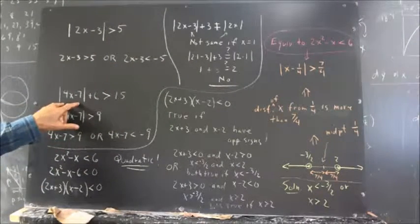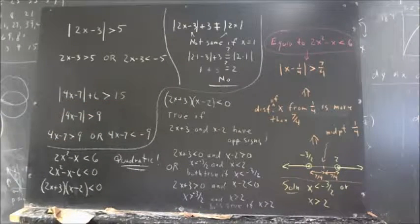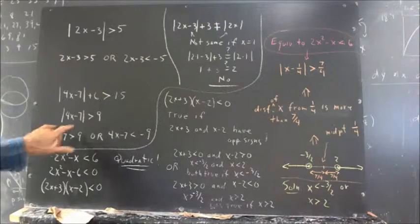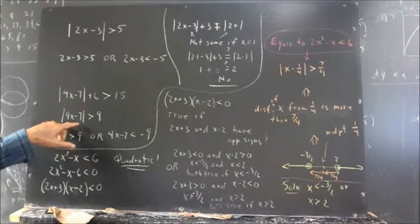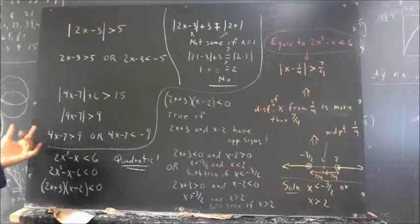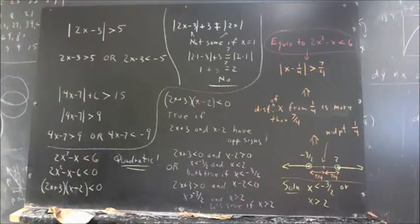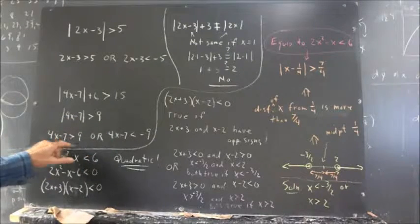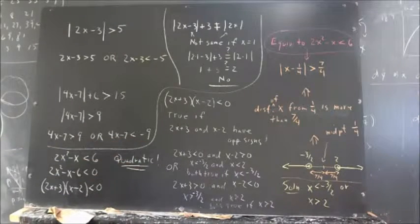If you have the absolute value of 4x minus 7 plus 6 greater than 15, first you have to isolate the absolute value — get it into the standard form — before you can split it. In this case, we get the absolute value of the quantity greater than 9, meaning the quantity is either greater than 9 or less than negative 9.